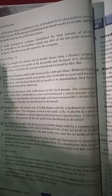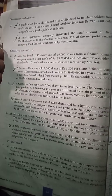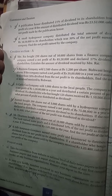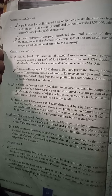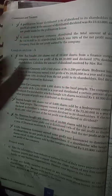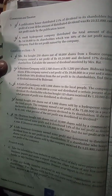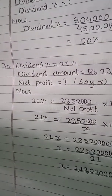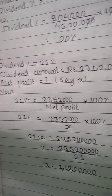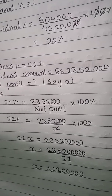Question four: A publication house distributed 21% dividend to its shareholders from the net profit. If the amount of distributed dividend was Rs. 23 lakh 52,000, calculate the net profit of the publication house.